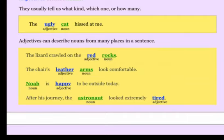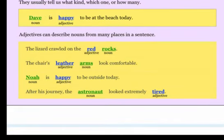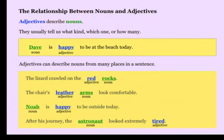So if you can place the adjective in front of the noun and the combination makes sense to you when you say it, it's probably an adjective. They usually tell us what kind, which one, or how many.